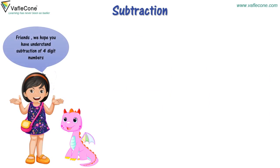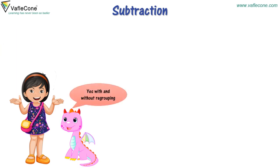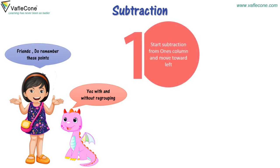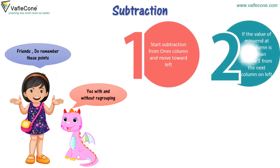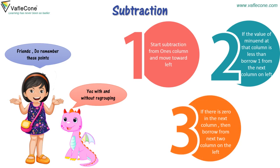Friends, we hope you have understood subtraction of 4-digit numbers, with and without regrouping. Friends, do remember these points. 1. Start subtraction from the 1's column and move towards the left. 2. If the value of the minuend at the column is less, borrow 1 from the next column on the left. 3. If there is a 0 in the next column, then borrow from the next 2 columns on the left.